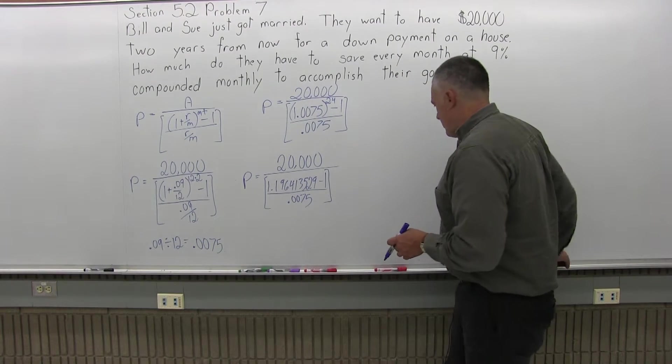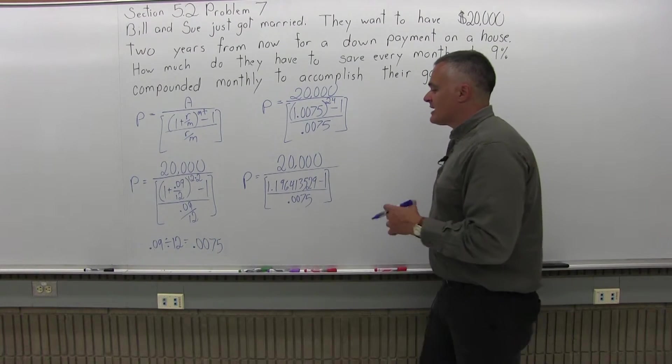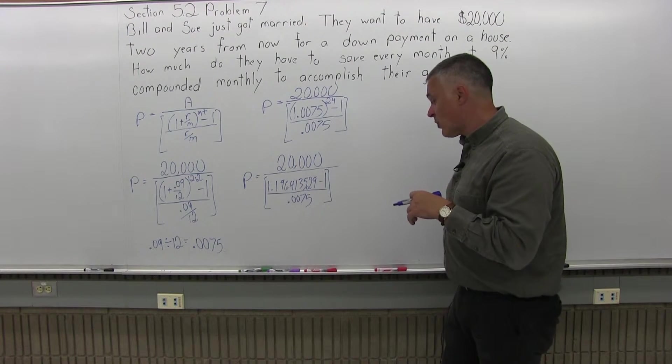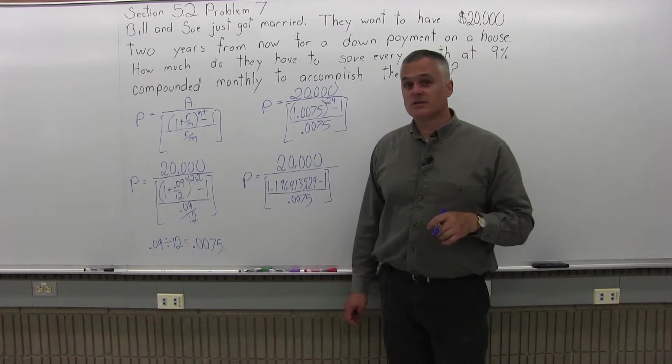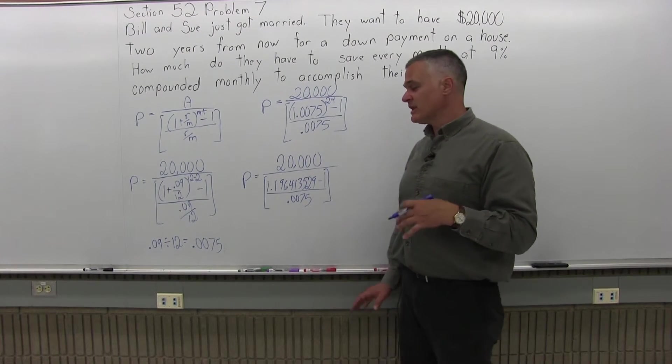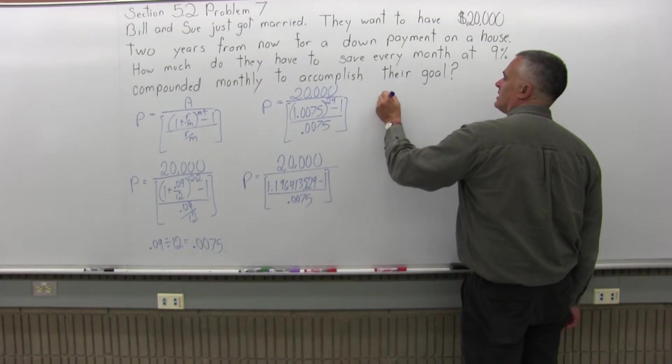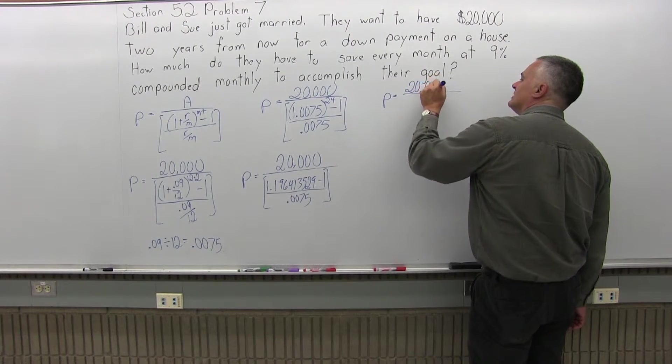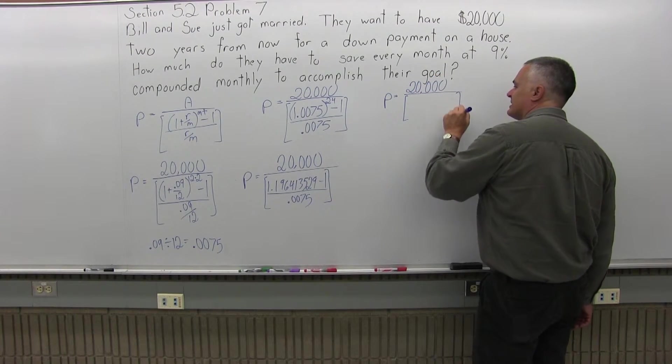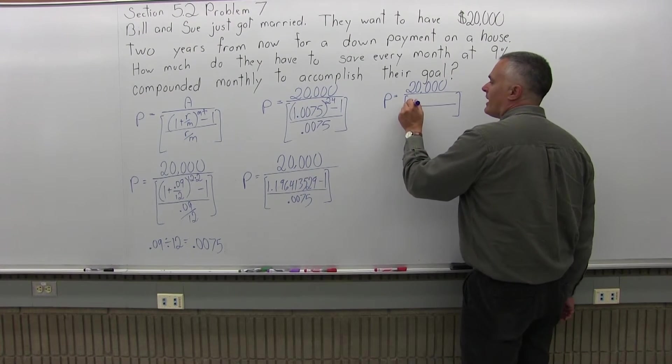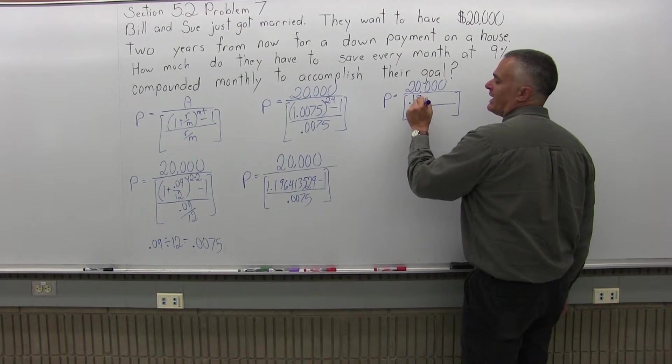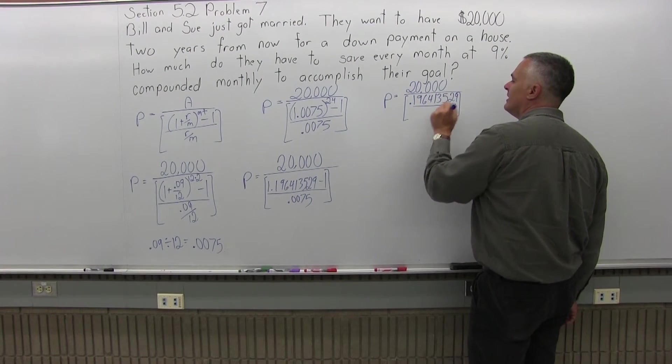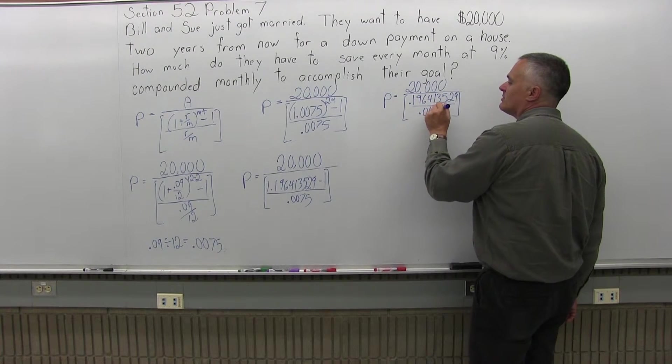So this stage of the formula, I have P equals 20,000 over some brackets, and the numerator of the brackets, 1.196413529 minus 1. And in the denominator of the brackets, .0075. So let me deal with that minus 1. It's very easy to do. So the next stage of the formula, I'm going to have P equals 20,000. And it's going to be over some brackets. In the top of the brackets, I'm going to have 0.196413529. And in the denominator of the brackets, .0075.